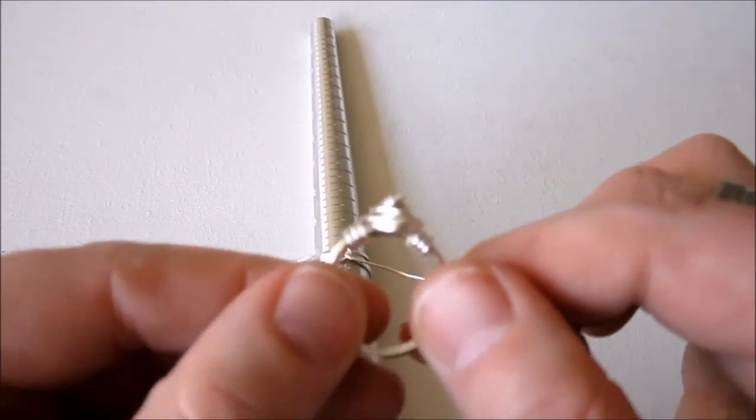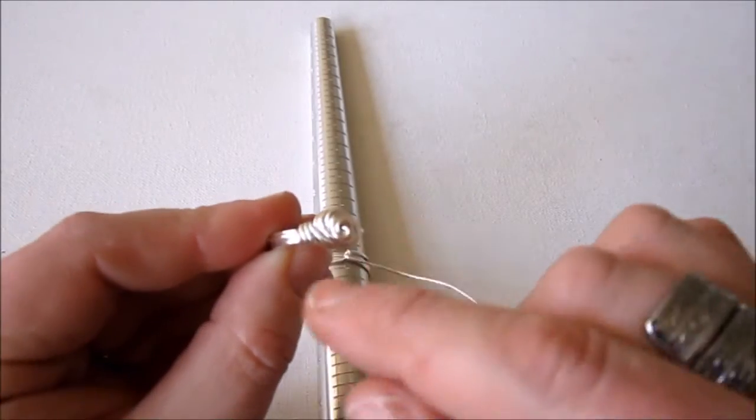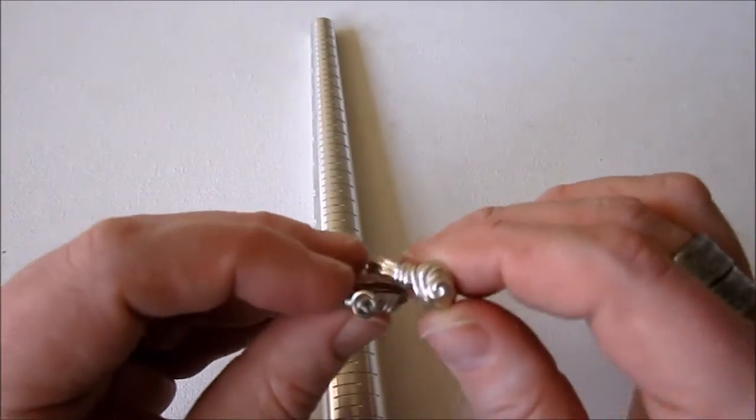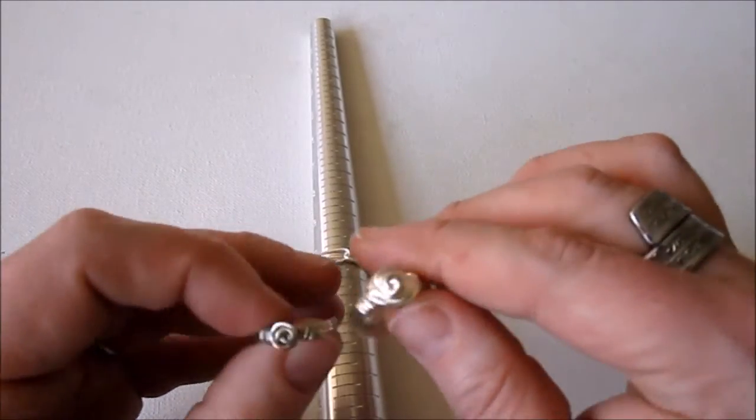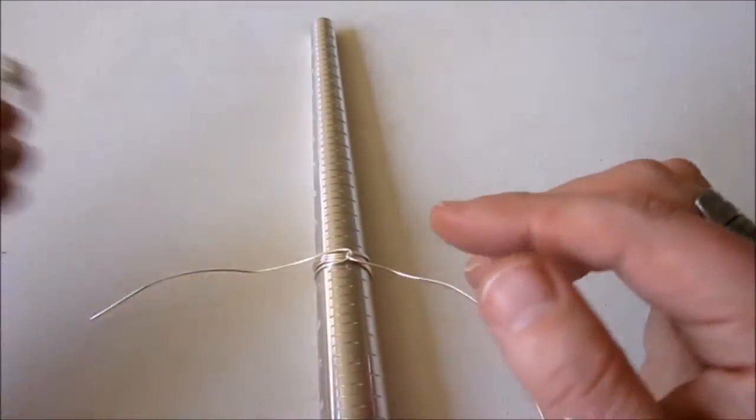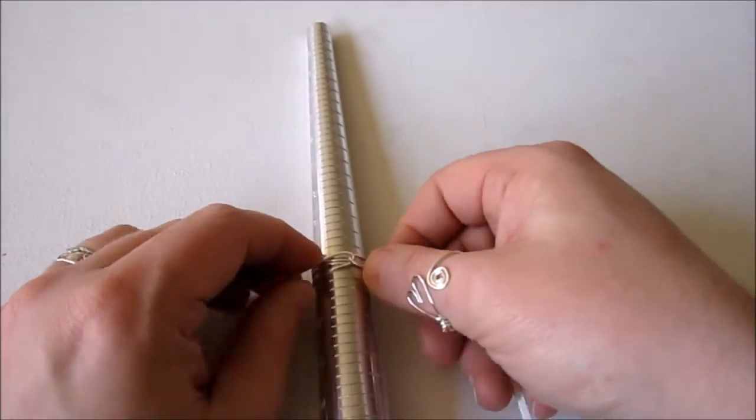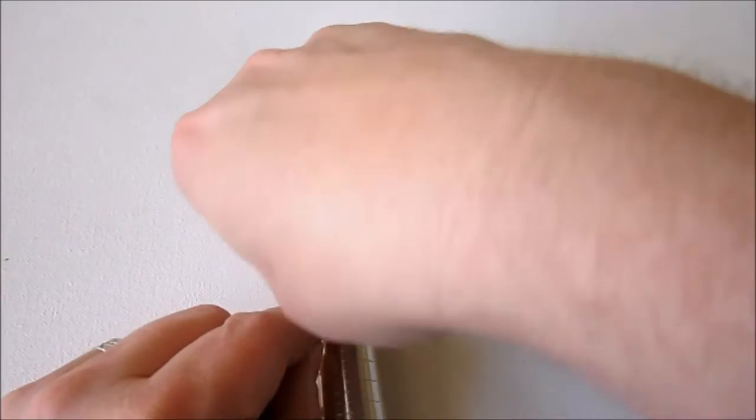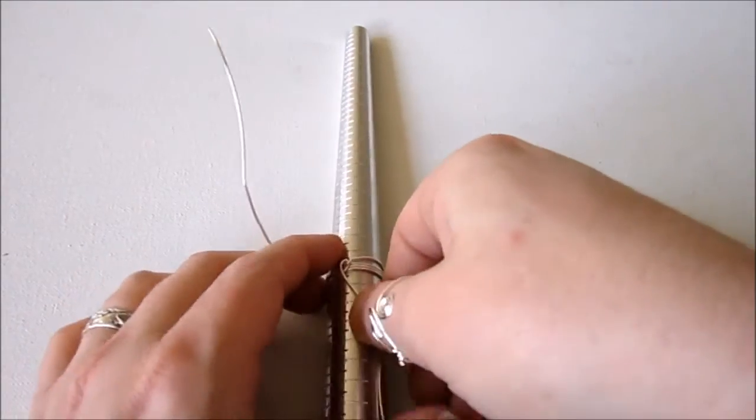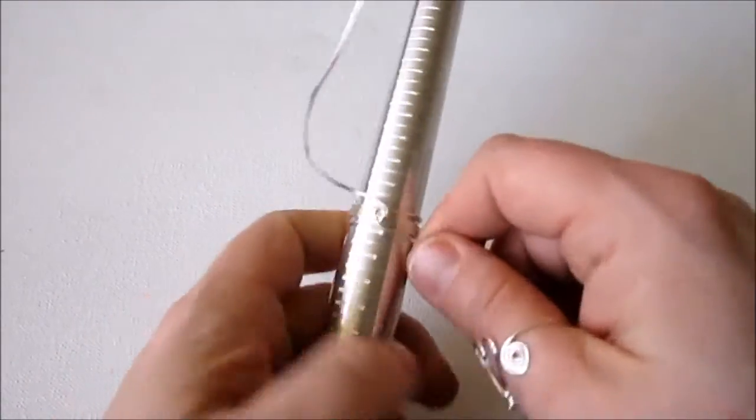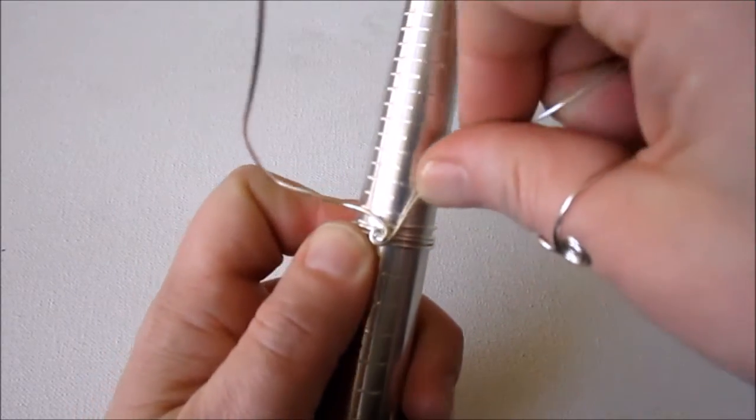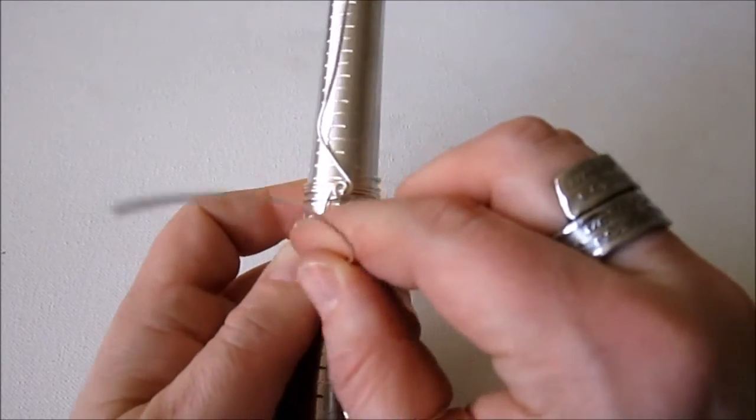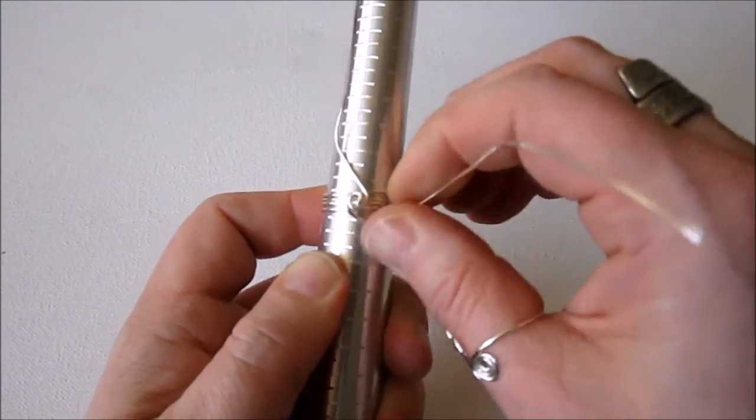As you can see, I've twisted around a few times on this ring. You really can go as many times as you want. But basically, what we're going to do is every time you go around, you're going underneath the twist you made before. So I'm taking this wire and going underneath the wire ahead of it. And you just sort of keep going around.